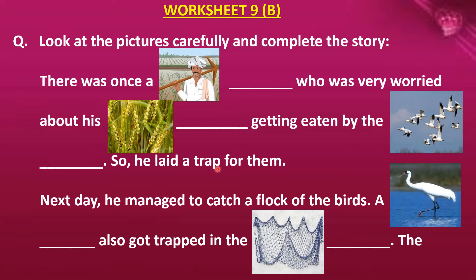So he laid a trap for them. Trap, children — trap means to catch. The farmer laid a trap to catch the birds who were eating his crops. Next day he managed to catch a flock of birds. Flock means group — a flock of birds means a group of birds.